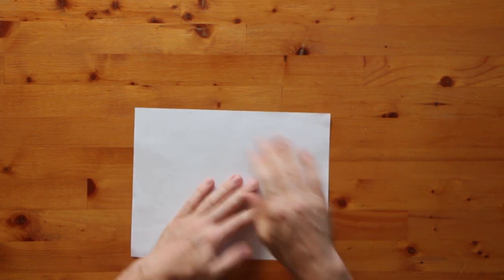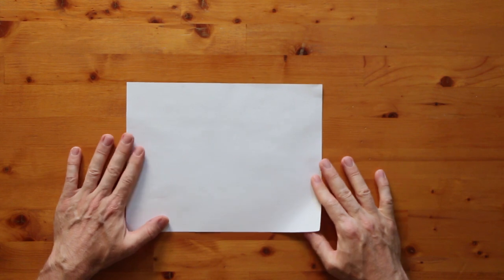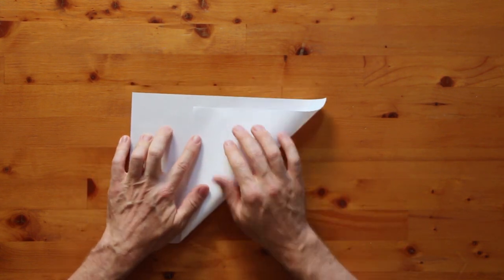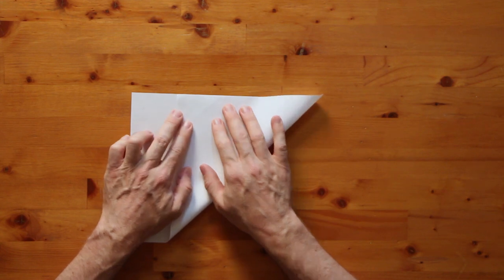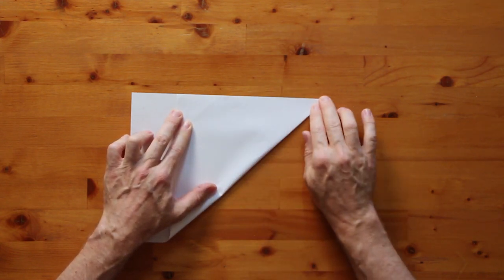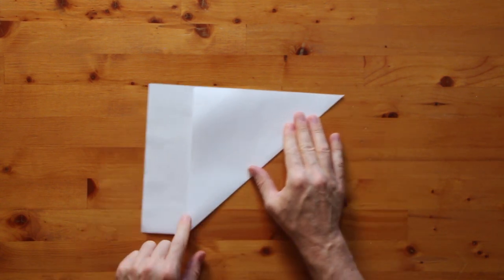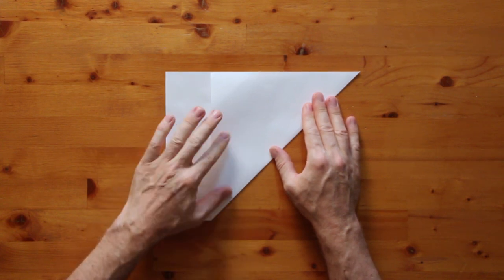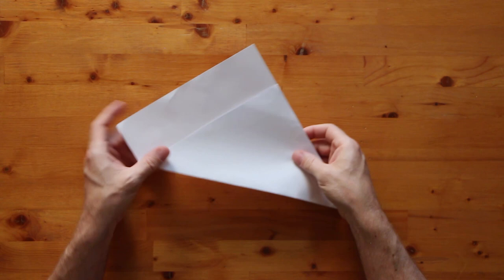First we're going to start with our regular letter size or A4 size sheet of paper and we're going to turn it into a square. You may know how to do this, you may not. You can forward if you already know, but if you don't I will show you. You want to line up this edge and fold it into a triangle here and make a nice little crease there, and you'll get a nice little overhanging bit right here, and that's the bit we want to get rid of to turn our piece of paper into a square.